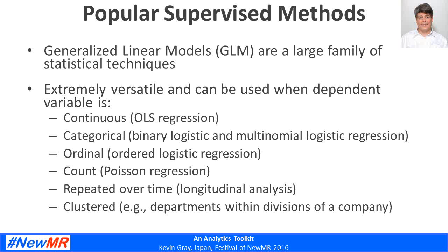Let's take a look at some popular supervised methods. There's something called generalized linear models, or GLM — there are a whole bunch of them — and they're extremely useful and versatile, used a lot in conjoint, choice modeling, and key driver analysis. They can be used when the dependent variable is continuous, categorical, ordinal, count, repeated over time, or clustered — for example, departments within divisions of a company.